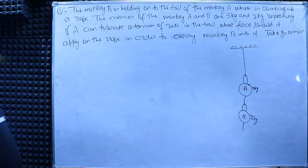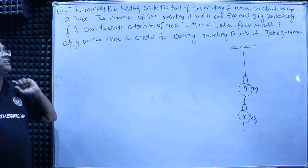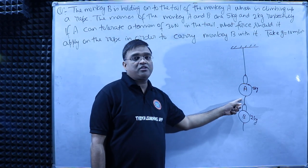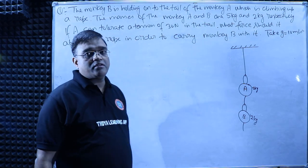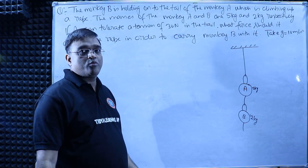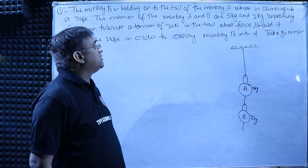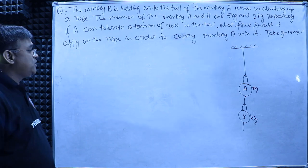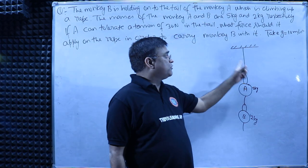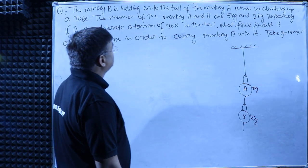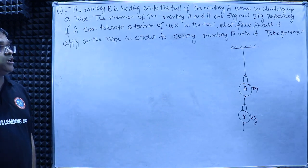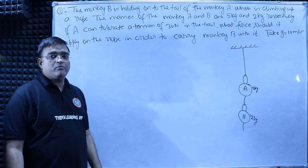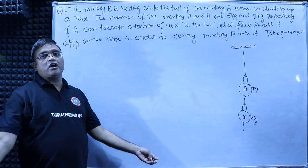If Monkey A can tolerate a maximum tension of 30 N in its tail, what force should it apply on the rope in order to carry Monkey B with it?